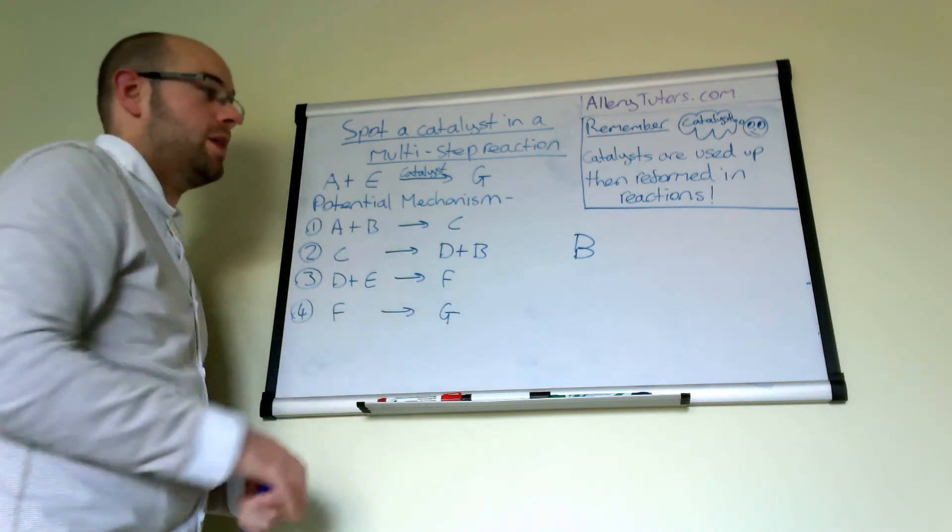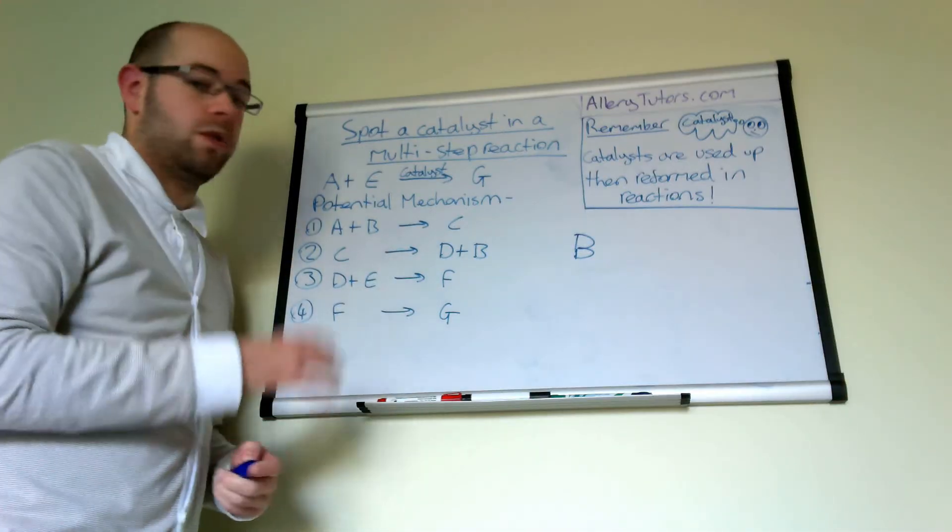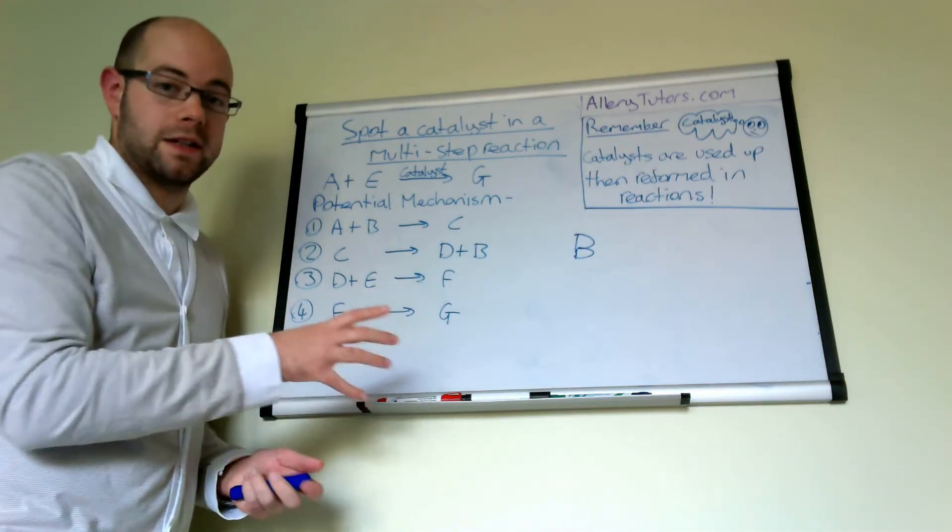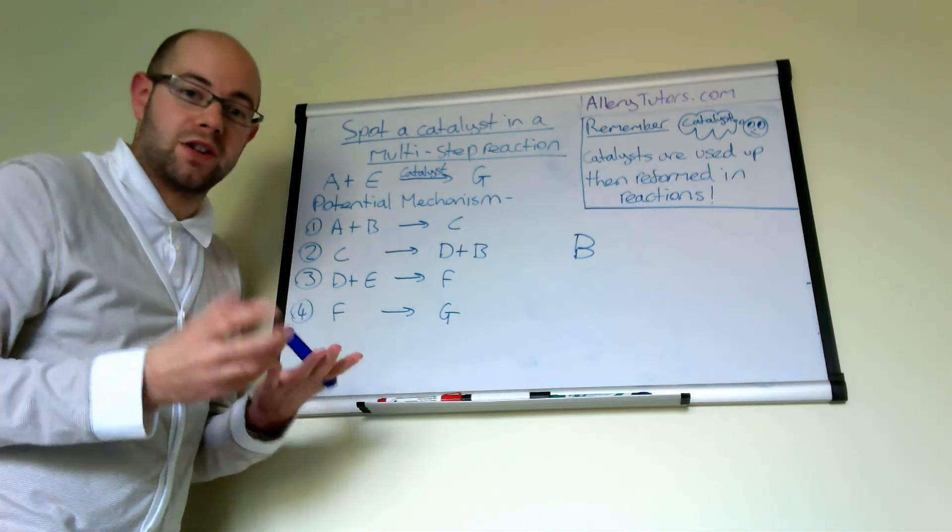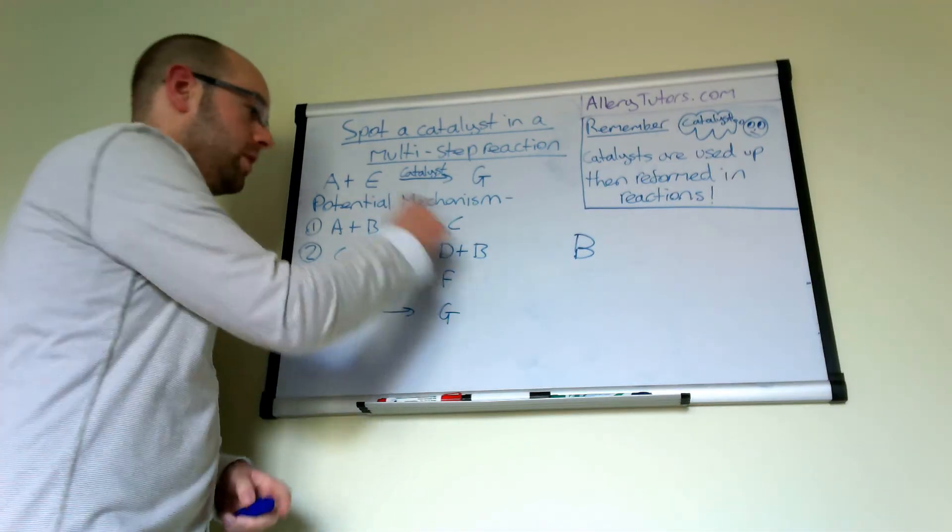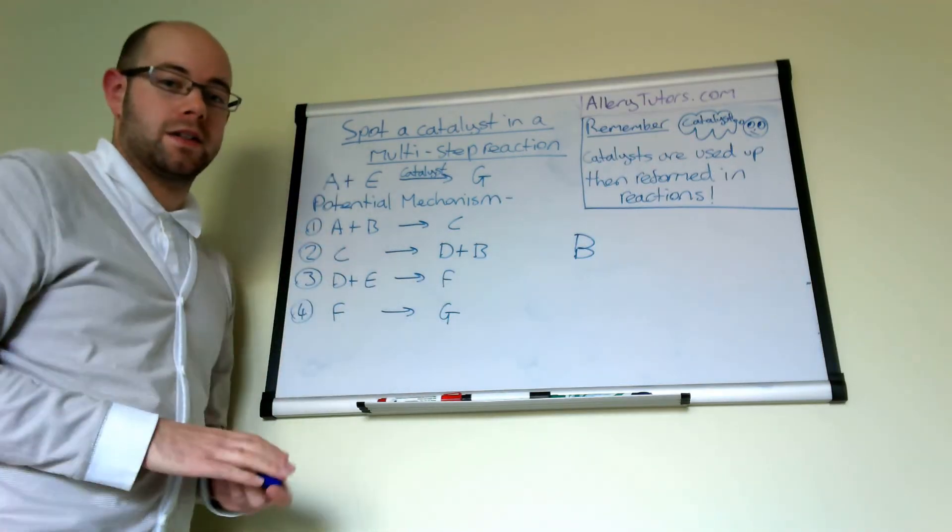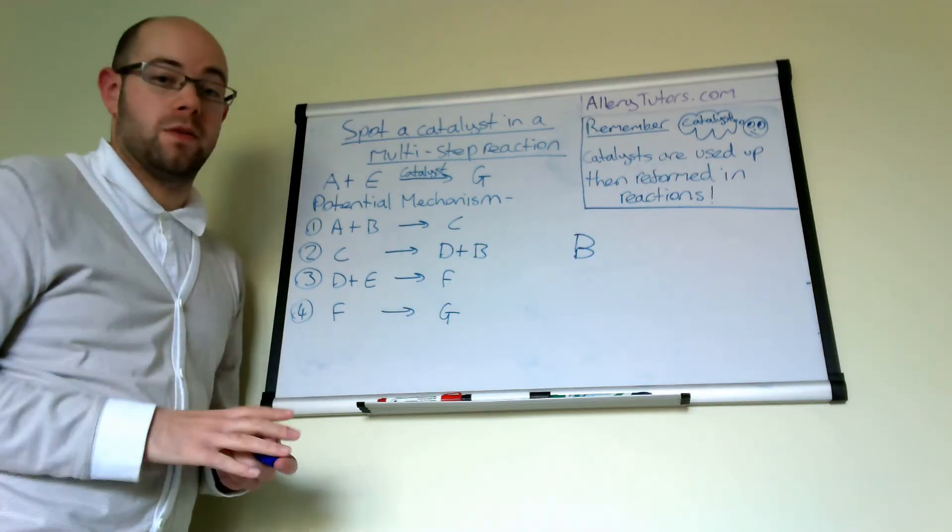So actually in this step here then B is your catalyst. But in the reaction or in an exam, they might give you generic letters like this or they might give you an actual reaction. Just make sure you're looking out for the catalyst being reformed. It must be used and then reformed in a later step. That's all you're looking for.